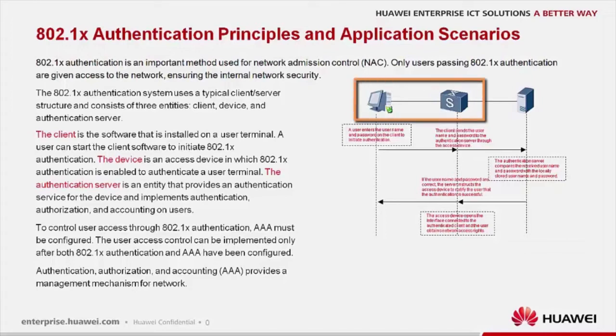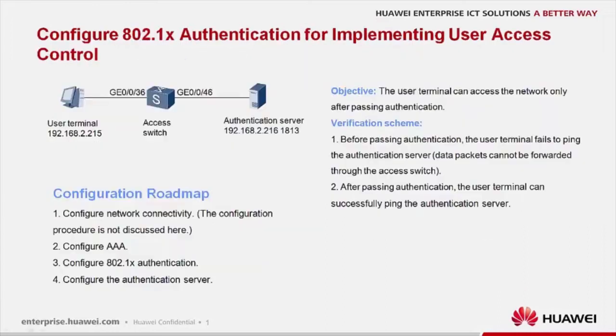To put it simply, the .1x authentication process is the interaction process between the client and the switch, and the AAA process is the interaction process between the access device and server. Next, let's see how to configure .1x authentication for implementing user access control.